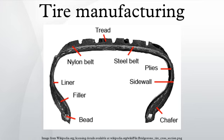Pirelli Tire developed a special process called MIRS that uses robots to position and rotate the building drums under stations that apply the various components, usually via extrusion and strip winding methods. This permits the equipment to build different tire sizes in consecutive operations without the need to change tooling or setups, making it well suited to small volume production with frequent size changes. The largest tire makers have internally developed automated tire assembly machines to create competitive advantages in construction precision, high production yield, and reduced labor.